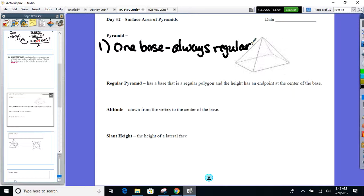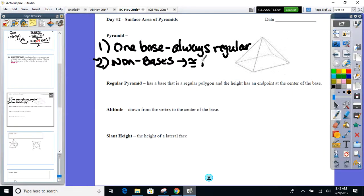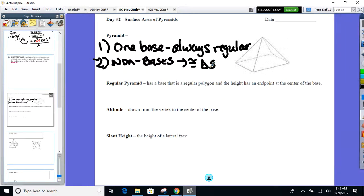What about all the non-bases? All the non-bases, they're always in the shape of triangles. Congruent triangles. That's huge, because once I find the area of one, I can multiply by how many of them there are. Congruent triangles.